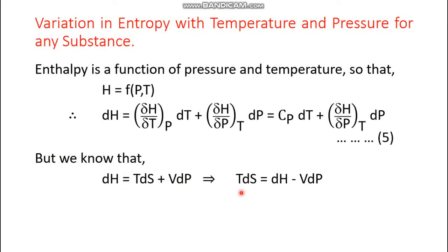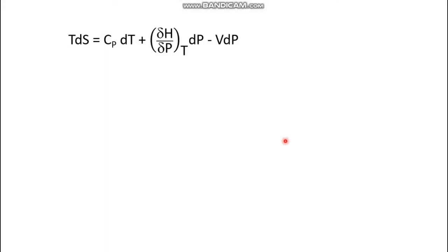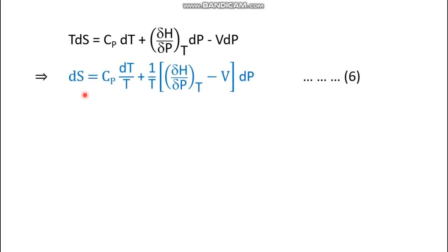The fundamental thermodynamic equation for a closed system is dH = TdS + VdP, which rearranges to TdS = dH − VdP. Substituting equation five for dH gives TdS = Cp dT + (∂H/∂P)_T dP − VdP. Dividing by T, we get equation six: dS = (Cp/T) dT + (1/T)[(∂H/∂P)_T − V] dP. This is the generalized equation for entropy change in terms of temperature and pressure.